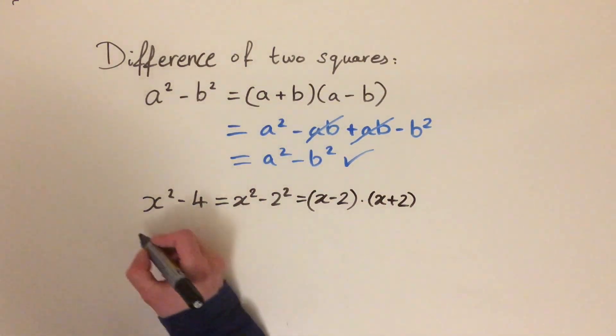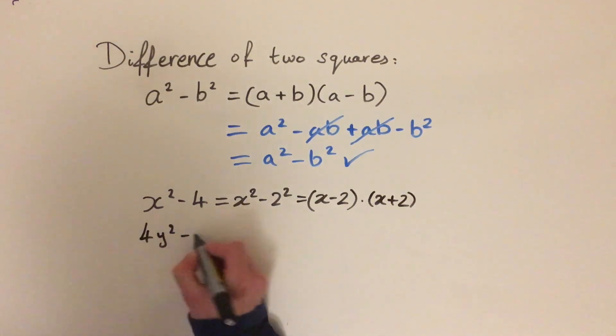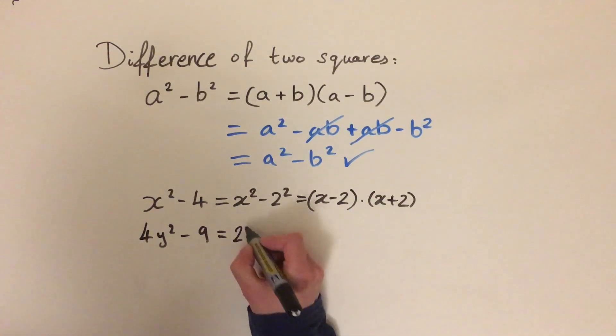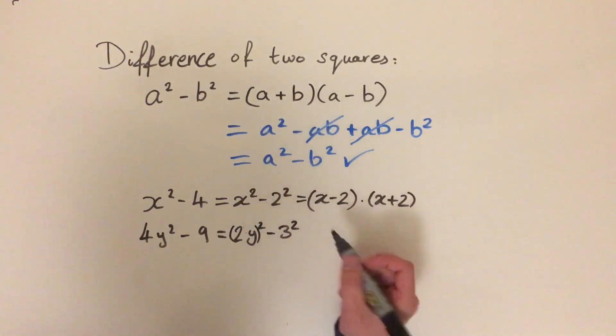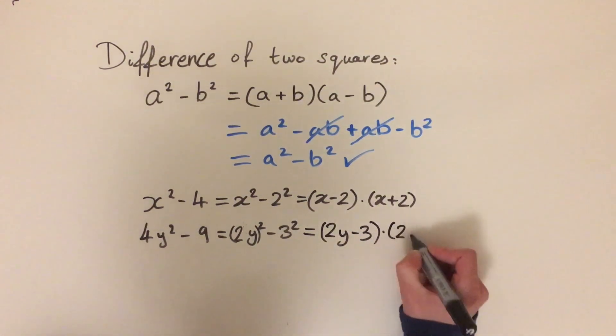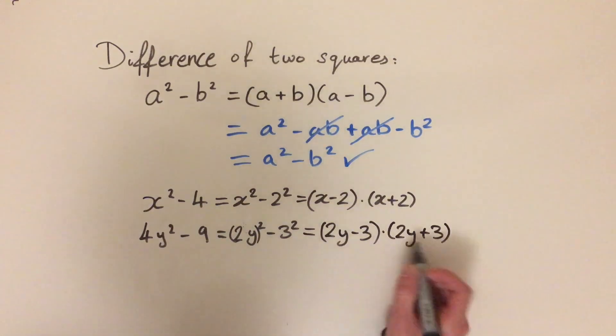So another example, let's do 4y squared minus 9. So 4 is a square number and 9 is also a square number. So we can write this as 2 squared times y squared minus 3 squared. And 2 squared times y squared, that's the same as having 2y all squared. So now we have the difference of 2 squares and we can use the formula to simplify. And we're going to get 2y minus 3 times 2y plus 3. So that's great. That's a much simpler form.